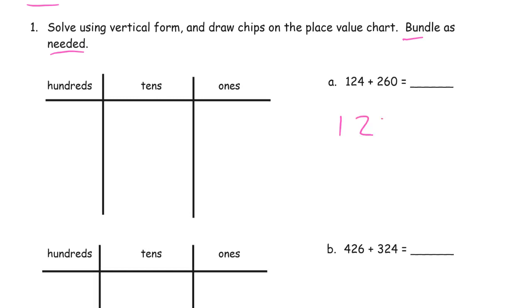Do the vertical form over here. Start with the ones digits always when you do vertical math. 4 plus 0 is 4. Now our tens, 2 plus 6 is 8. And our hundreds, 1 plus 2 is 3.